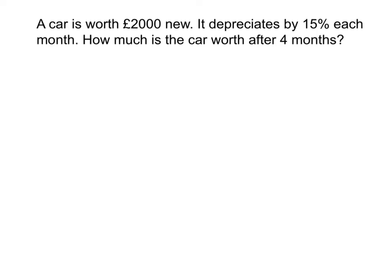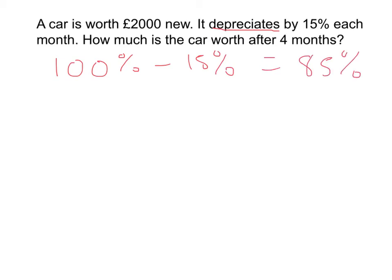This first example is obvious because it uses the word depreciation, but I'll do an exam question in a second where it doesn't. So a car is worth £2,000 new — that's our original amount. It depreciates, so it goes down in value, by 15% each month. Originally you assume the original amount is 100%. If it's depreciating by 15%, then every month it's only worth 85% of what it was before. So 100% take away 15% gives you 85%. To change 85% into a decimal, divide it by 100, and you get 0.85.